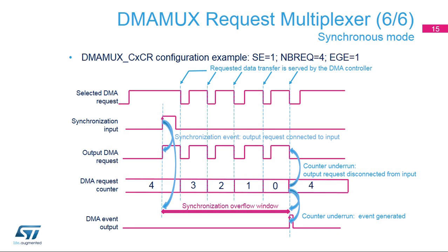When the DMA MUX channel is configured in synchronous mode, its behavior is as follows. The request multiplexer input (DMA request) from the peripheral can be pending and will not be forwarded on the DMA MUX request multiplexer output until the synchronization event is received. Then the request multiplexer connects its input and output, and all peripheral requests are forwarded. Each forwarded and granted DMA request decrements the request multiplexer counter set at a defined programmed value. When the counter reaches zero, the connection between the DMA controller and the peripheral is cut, waiting for a new synchronization event. For each counter underrun, a request multiplexer can generate an optional event to synchronize and/or trigger a second DMA MUX request multiplexer channel. The same event can be used in low-power scenarios to switch the system back to stop mode without CPU intervention.